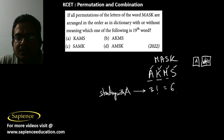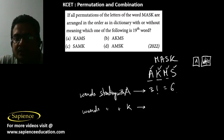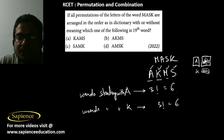The number of words starting with A equals the arrangements of the remaining letters K, M, S = 3! = 6 words. Similarly, the number of words starting with K is also 3! = 6 words. So six words start with A and six words start with K.